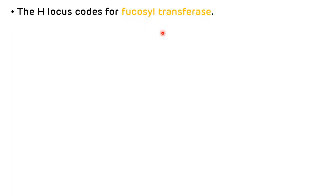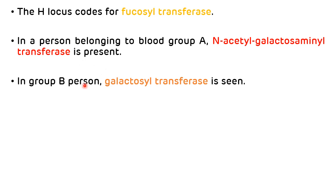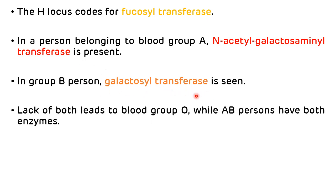The H locus codes for fucosyltransferase. Persons belonging to blood group A contain N-acetylgalactosamine transferase enzyme, while blood group B persons contain galactoside transferase enzyme. Absence of both enzymes leads to blood group O, while AB persons have both enzymes.